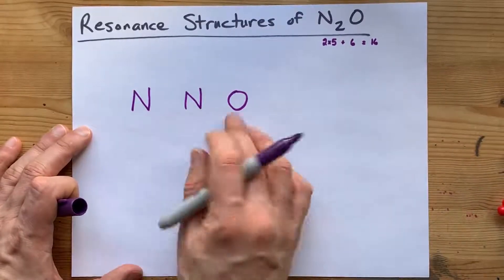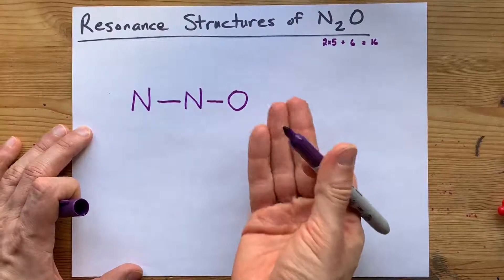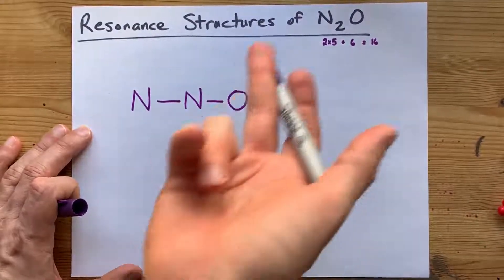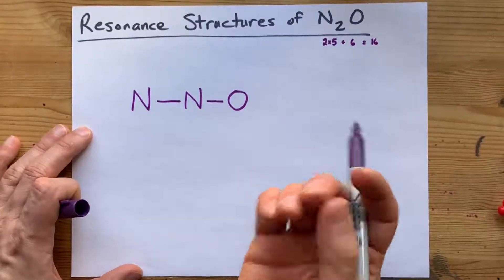Now, I always draw single bonds between my central atom and my outer atoms first, because if they weren't bonded, it wouldn't be a molecule. And then I complete the octets on my outer atoms first.